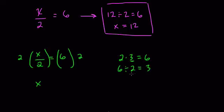So 2 times something, then divided by 2. Those multiplying by 2 and dividing by 2 cancel out. So here these cancel out, and you have the x. 6 times 2 is 12, and you have your answer.